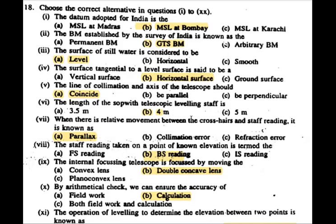When there is a relative movement between the cross hair and staff reading, we need to remove the parallax. We will remove the parallax by adjusting the eyepiece of the telescope.